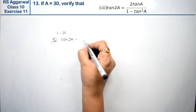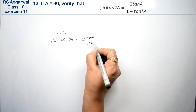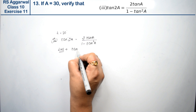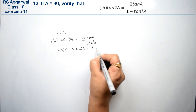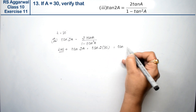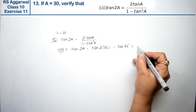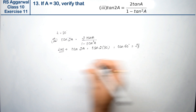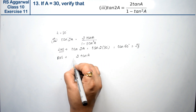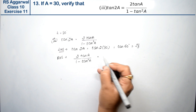For the left hand side: tan 2A = tan(2 × 30°) = tan 60°. And tan 60° equals √3. Now for the right hand side: 2 tanA upon (1 - tan²A). An important note: when we have 2A, we multiply A by 2; and for the whole square, we first find the value then square it.